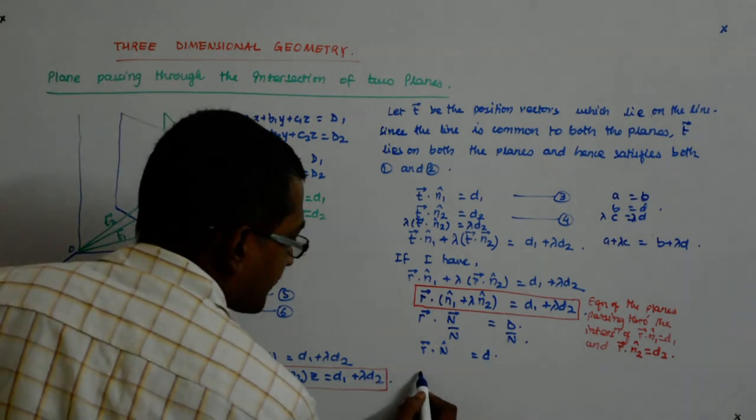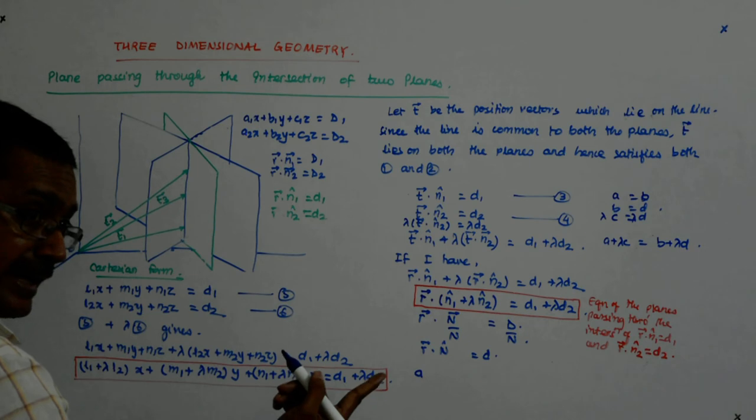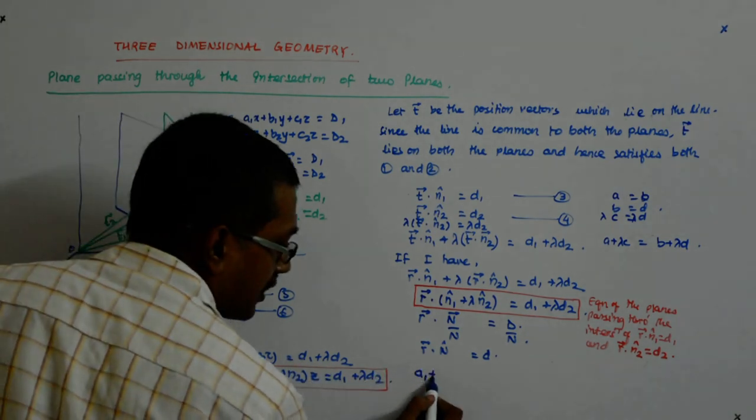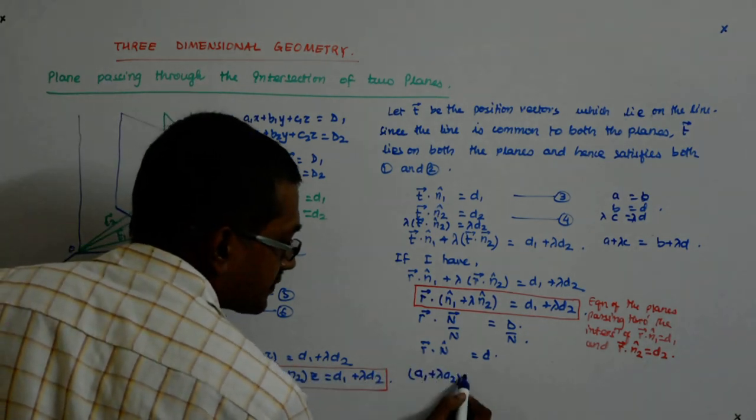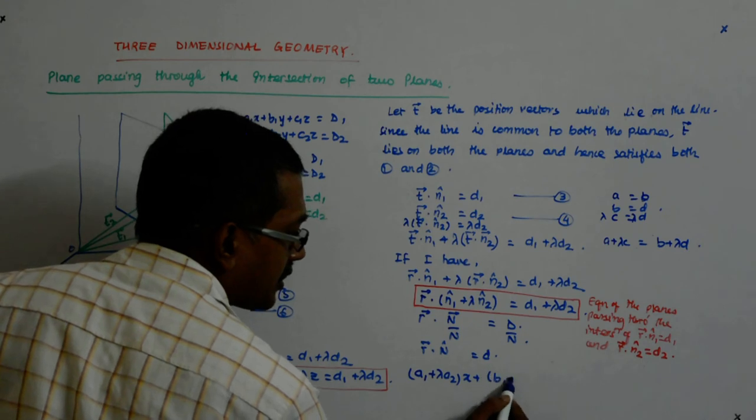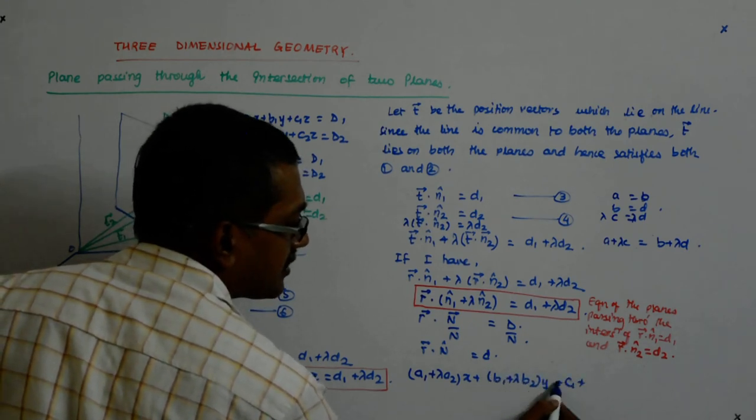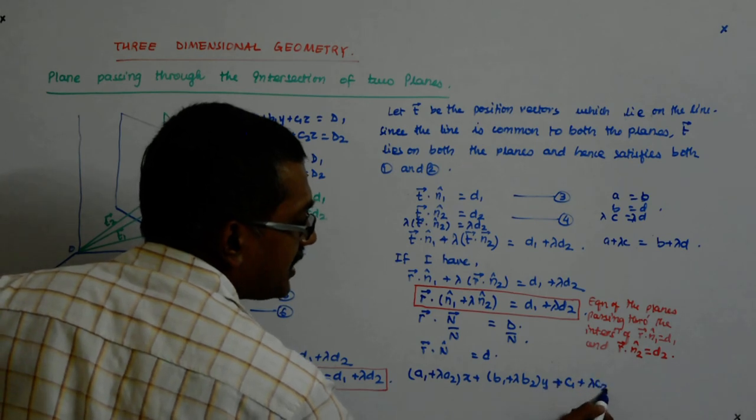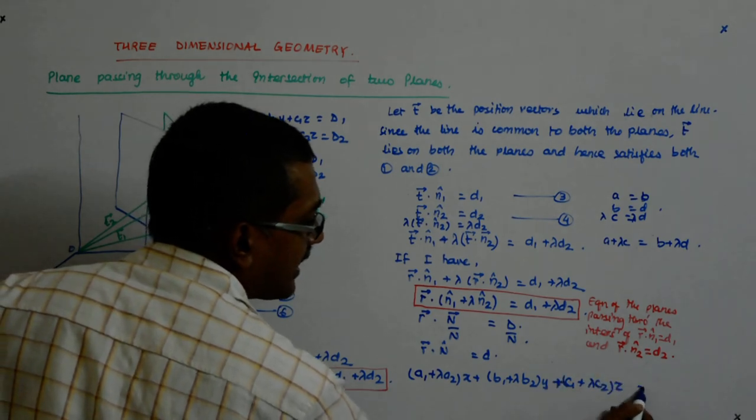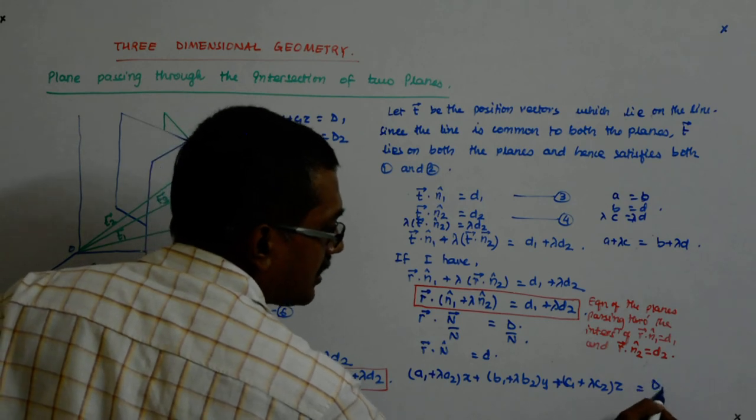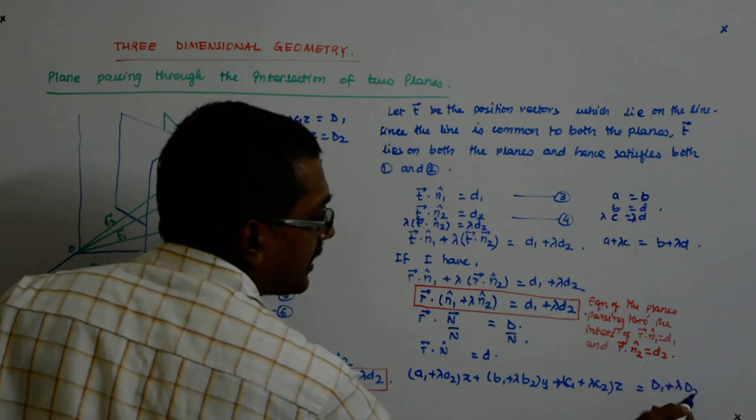I will write it here. So it will give you instead of L1, it will become A1. So A1 plus lambda A2 x plus B1 plus lambda B2 y plus C1 plus lambda C2 z is equal to D1 plus lambda D2.